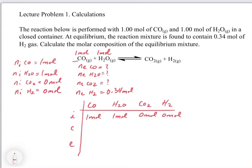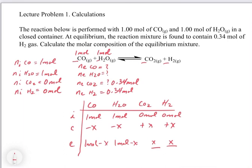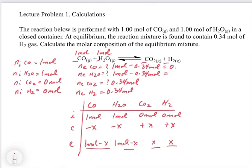We pull our stoichiometric coefficients — this one is all 1s, so we get minus x, minus x, plus x, and plus x for the change row. Reactants are being consumed and products are being produced. At equilibrium: 1 mole minus x, 1 mole minus x, x, and x. Since H2 at equilibrium is 0.34 moles, x equals 0.34. Because H2 and CO2 are both x, the concentration of CO2 is also 0.34 moles. For CO and H2O, it's 1 mole minus 0.34 moles, which equals 0.66 moles.